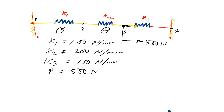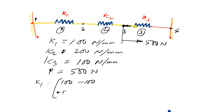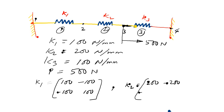For element 1, we write K1. K1 is equal to: 100, minus 100, minus 100, 100 — that is K1, minus K1, minus K1, K1. This is element 1. Similarly for element 2, we write K2: 200, minus 200, minus 200, 200.